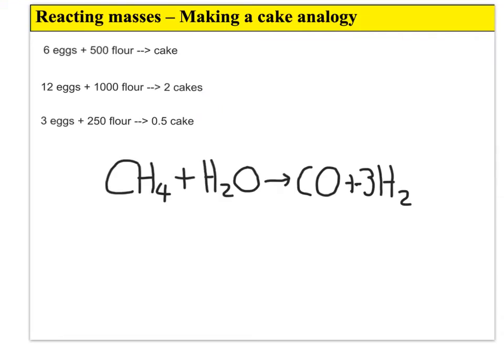But what about if I don't want cake? What if I want lots of hydrogen gas? One way to produce hydrogen gas is you can get some methane, add some water, and you get some hydrogen gas and also some carbon monoxide.